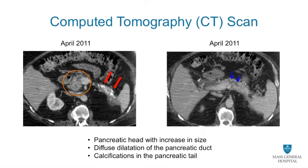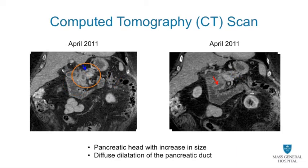However, the subsequent CT scan performed in April 2011 reveals an increase in the size of the pancreatic head, marked by an orange circle, and diffuse dilatation of the main pancreatic duct, pointed by blue arrows, as well as calcifications of the pancreatic tail. Taking a closer look, a 4.9 x 4.6 x 3.0 cm mass is identified in the pancreatic head with associated pancreatic and bile duct dilatation, indicated by blue and red arrows respectively.